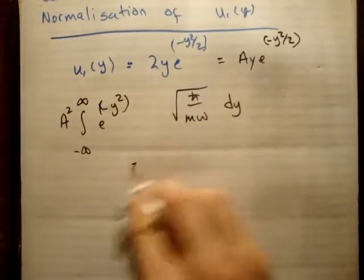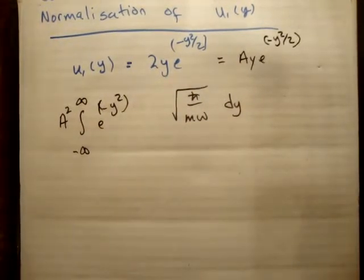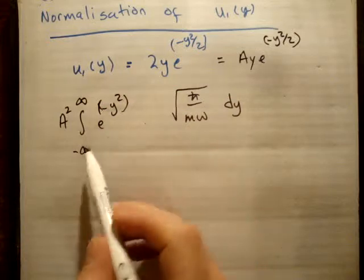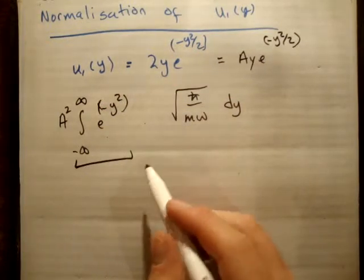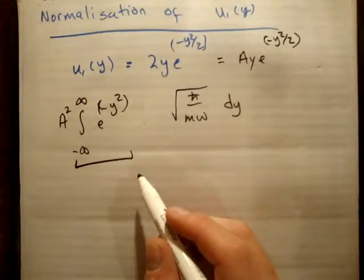You might even, if you want to search on the internet, look up Gauss's integral. Anyway, the answer to this, just this equation here is square root π over 2.